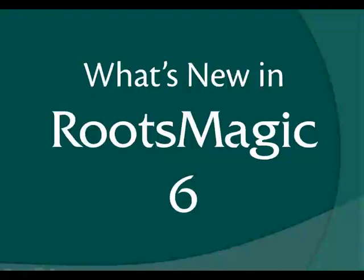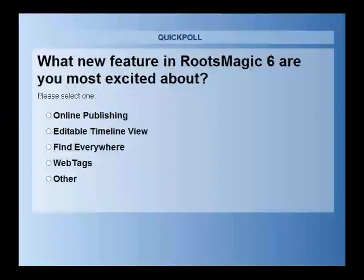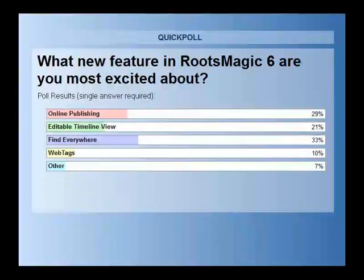First we'd like to start with a poll. We'd like to know — before we demonstrate them to you — what new feature in RootsMagic 6 are you most excited about: online publishing, the editable timeline view, Find Everywhere, web tags, or another feature? The results: 29% are most excited about online publishing, 21% about the editable timeline view, 33% about Find Everywhere, 10% about web tags, and 7% other. We'll run a similar poll at the end to see if any of your choices change.